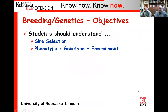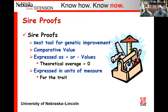So we have some objectives. The students should understand sire selection and what's involved in that, looking at the traits that a sire brings to the pedigree and to the mating, and also understand the difference between phenotype and genotype. Regarding sire proofs, we want them to understand that they are a tool for genetic improvement. They're used to compare animal to animal or sire to sire, and they're expressed as either a plus or minus value with the average being zero, in different units such as pounds, inches, or percentages for each trait.